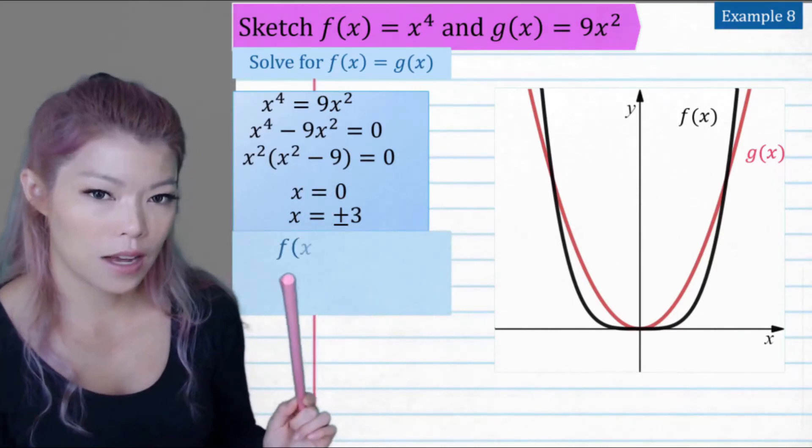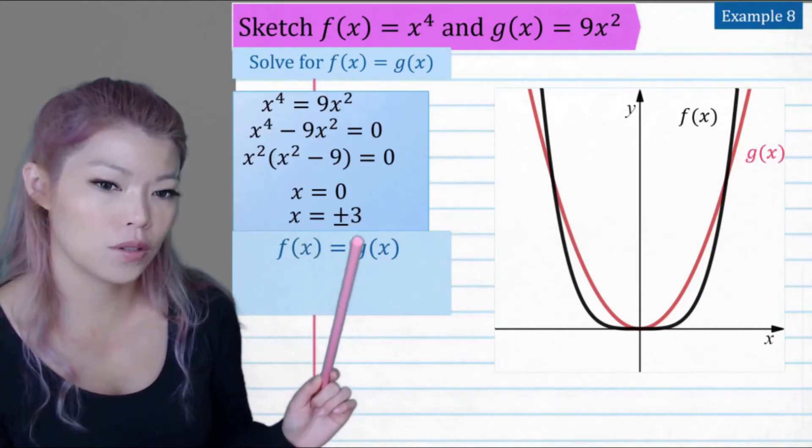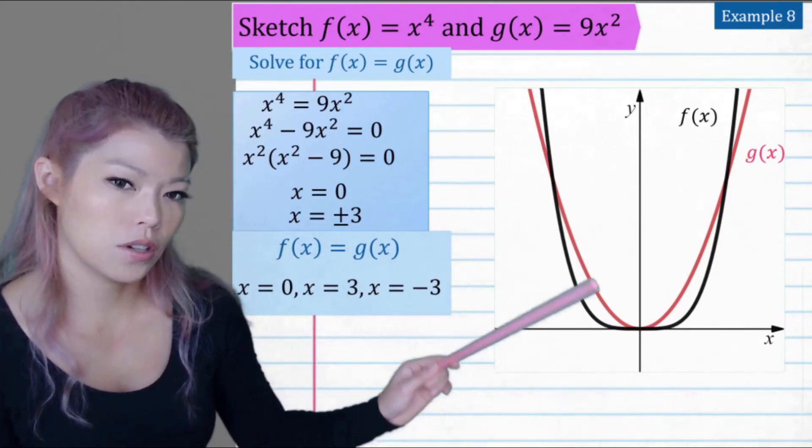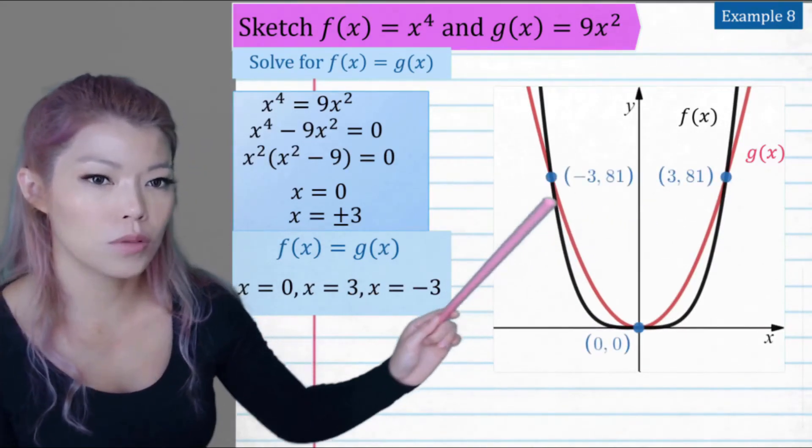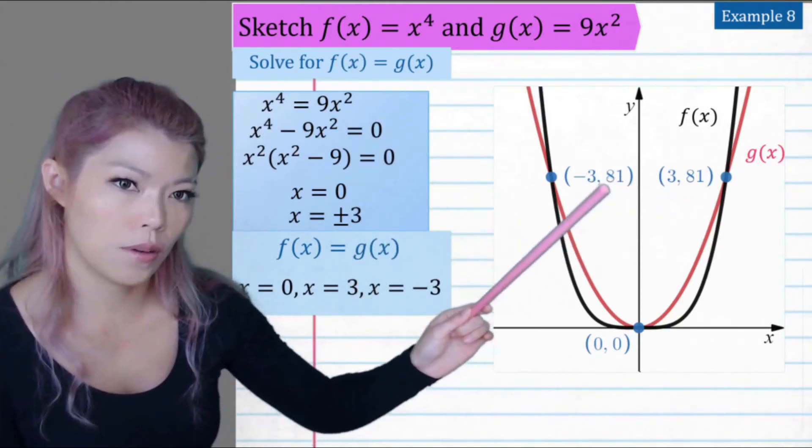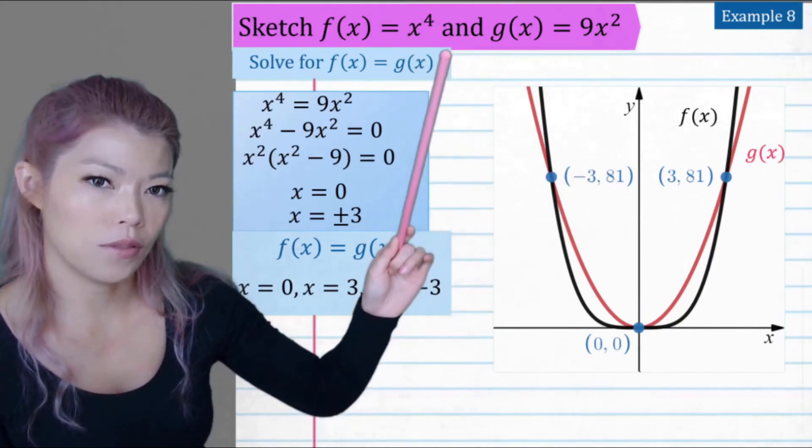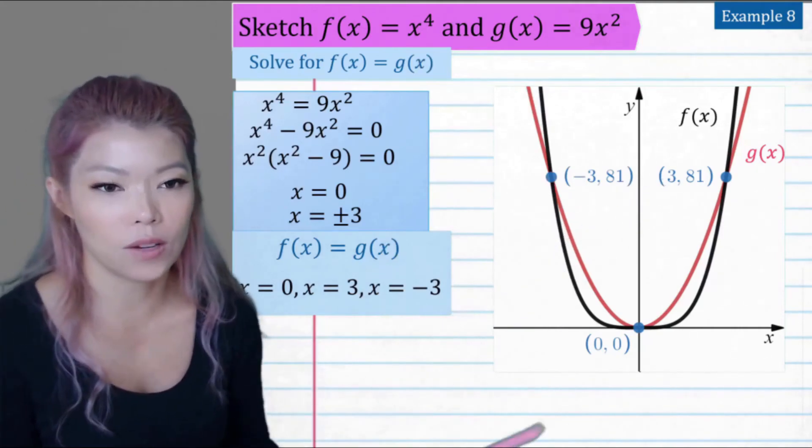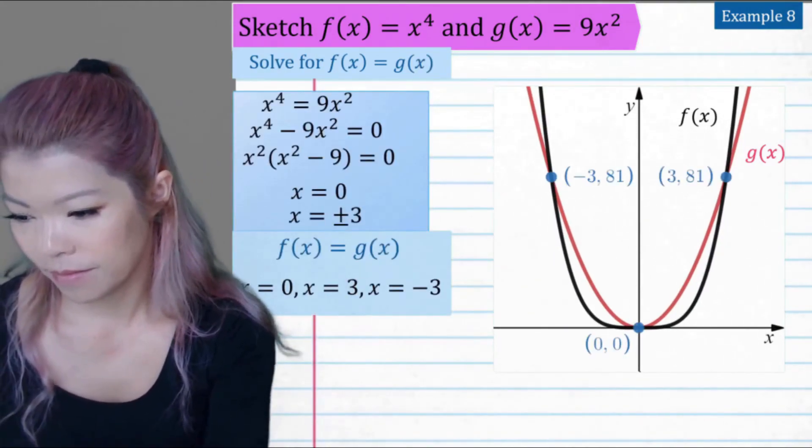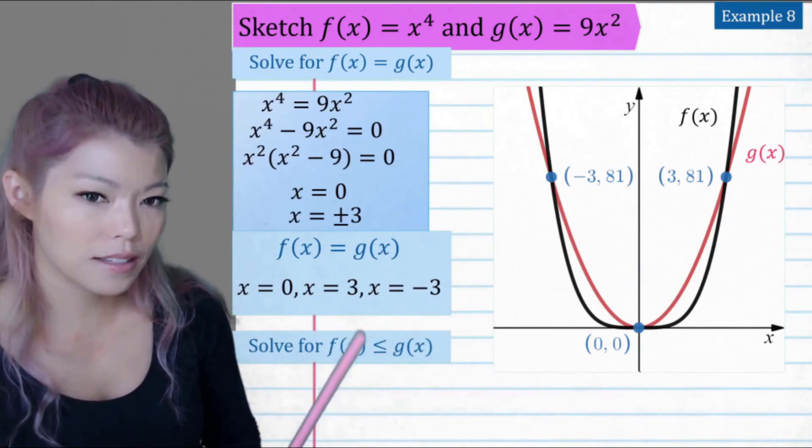So now we can write down that where f(x) is equal to g(x), we have the three intercepts: zero, three, and negative three. So zero, negative three, and three. And we can substitute into any of the equation to find the y values. So if I put negative three into the power of four, I'll get positive 81. And if we put three into x to the power of four, I will also get 81.